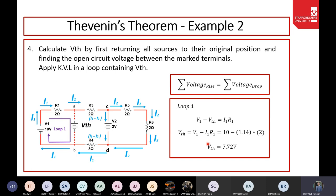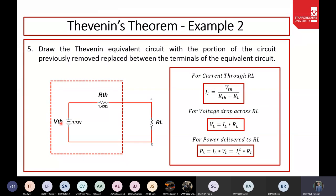Step four: find V_TH. Placing the imaginary Thevenin voltage source at terminals A and B and applying KVL in the simplest loop: V_TH = V1 − I1·R1. Substituting values gives V_TH = 7.72 V. Step five: remodel — we have V_TH = 7.72 V in series with R_TH = 1.43 Ω, and we can now find current, voltage, and power across any load.